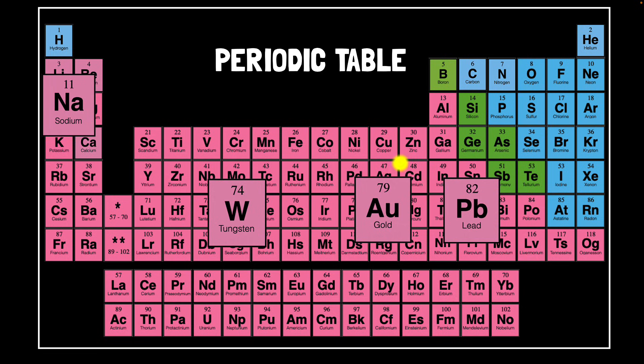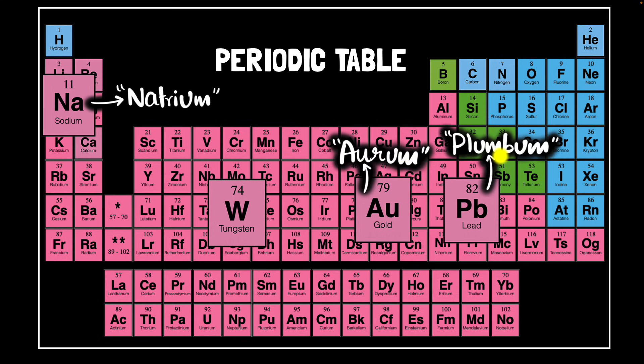Well, humanity has known about these elements for a long time now. And some of these symbols are taken from the old names from different languages like Greek, Latin, Arabic, German, and so on. For example, N A stands for natrium, a Latin word for sodium. AU comes from aurum. PB comes from plumbum, the Latin word for lead.